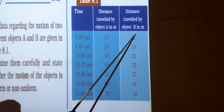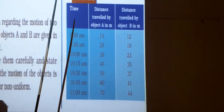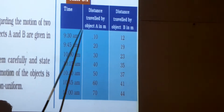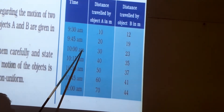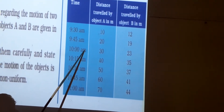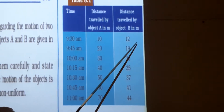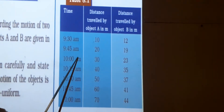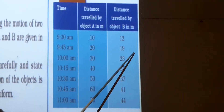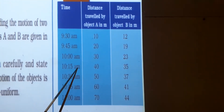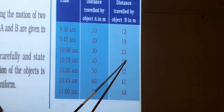Now coming to object B. You observe that the time intervals are the same here as well. But let us see the distances covered. For the first 15-minute interval, the distance covered is 12 meters. For the next 15 minutes, the distance covered is 19 minus 12, that is 7 meters. For the following 15 minutes, the distance is 23 minus 19, that is 4 meters. For the next 15-minute interval, the difference between 35 and 23 comes out to be 12 meters.